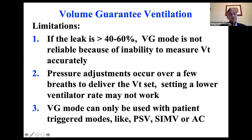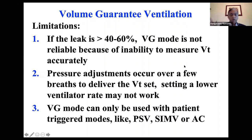Limitations: if ET tube leak is more than 40–60%, measurement is unreliable. Pressure adjustments occur over a few breaths to deliver the set tidal volume, so if you set a very low rate it may not work well — set your respiratory rate at 30 in volume guarantee mode, not lower. Volume guarantee only works if the patient is breathing spontaneously. If the baby is sedated or paralyzed, volume guarantee doesn't work — it has to be triggered by the baby. Always set a backup rate.